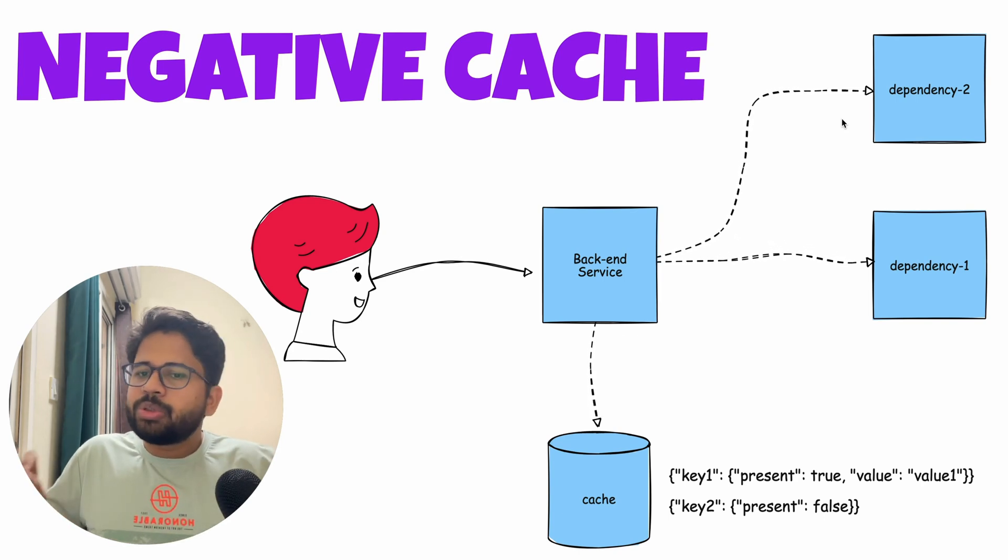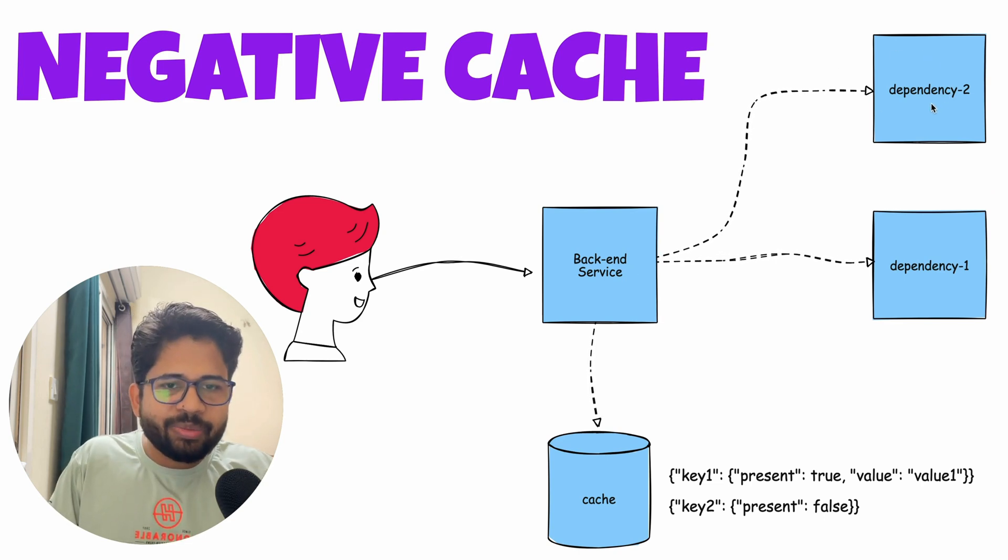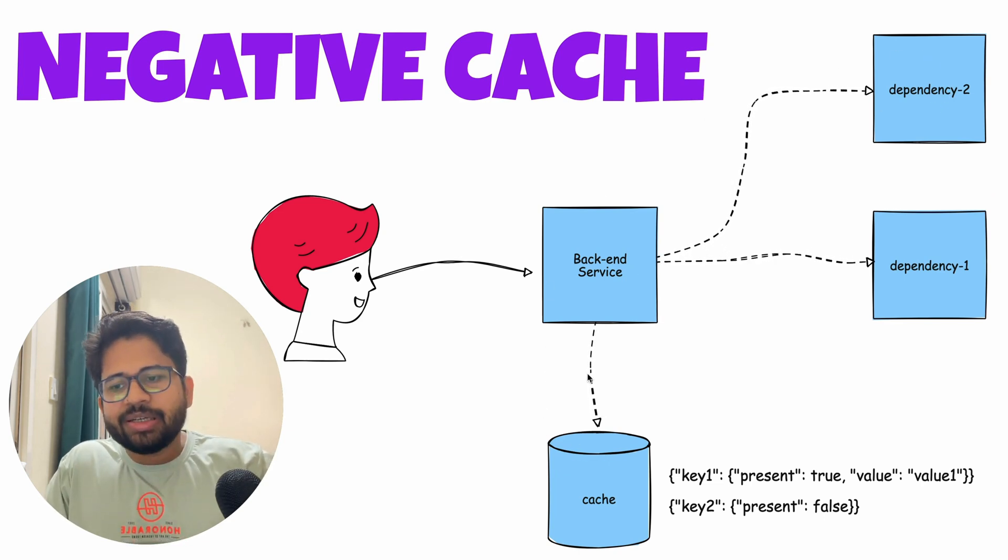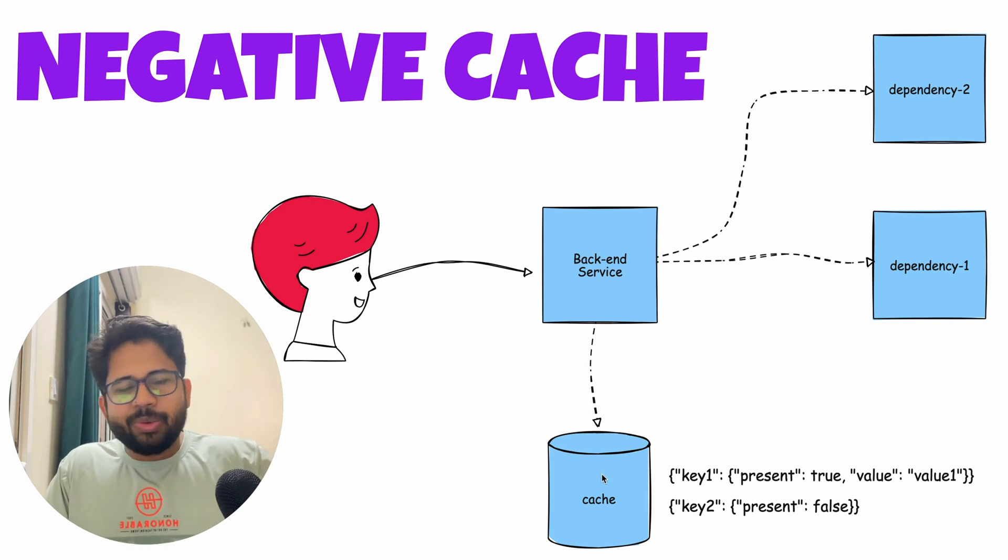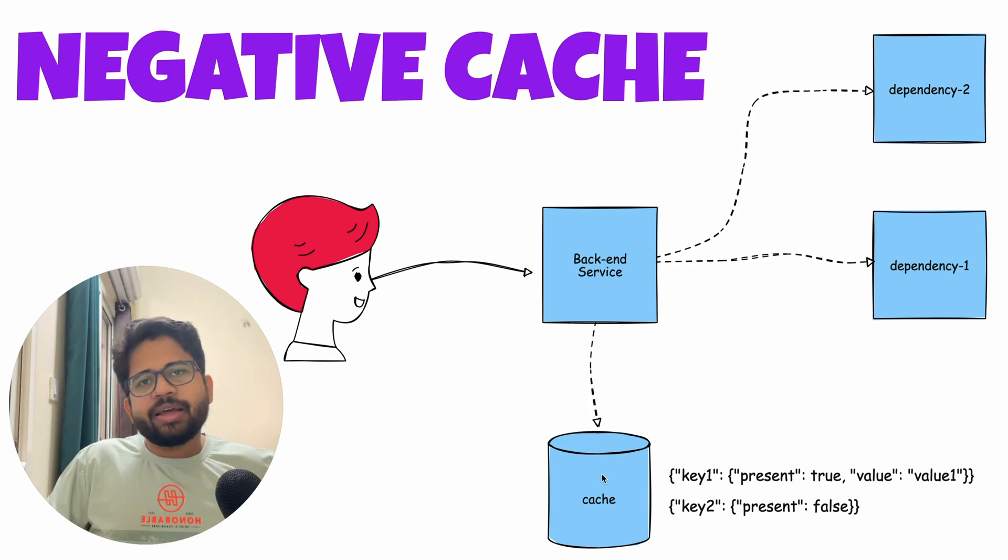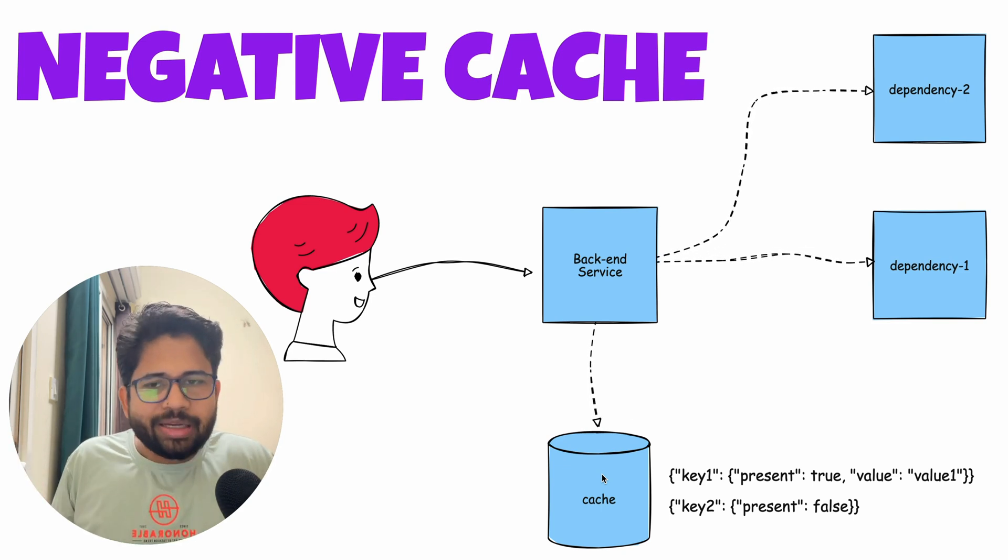Now, this approach will work fine. There is no problem at all that you make a request, you get the data from the dependent services, and then you cache it and give the data back to the customer, so that next time when the request comes, you can give the data from the cache. And there are multiple cache eviction policies as well, which I'm not going to talk about now. But this approach, everyone knows about. You cache the data.